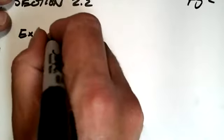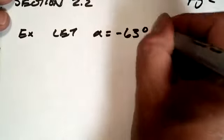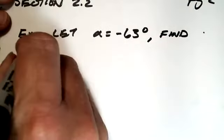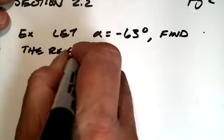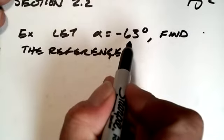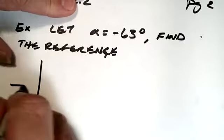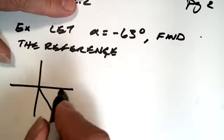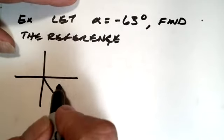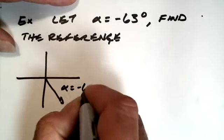So for example, let alpha equal minus 63 degrees, find the reference angle. Now this is just a little bit beyond what we did before because notice alpha is not between 0 and 360 degrees. But if we want to think about what this looks like, about a 63 degree angle measured sort of this way counterclockwise or clockwise, right?